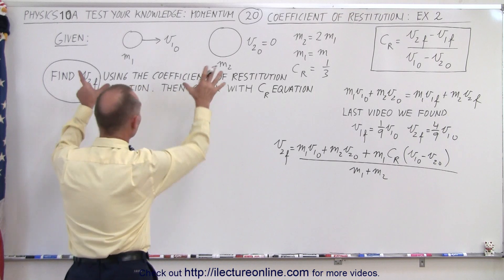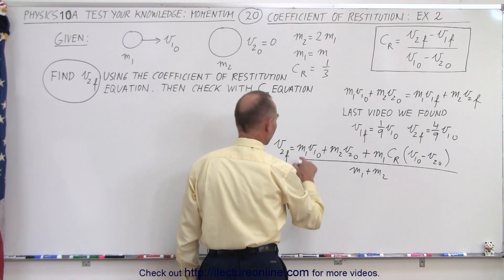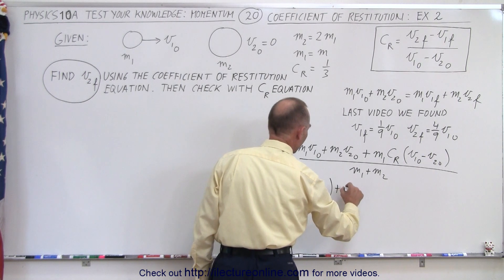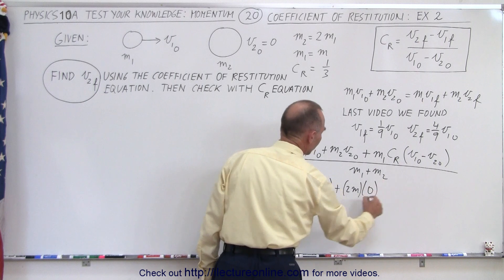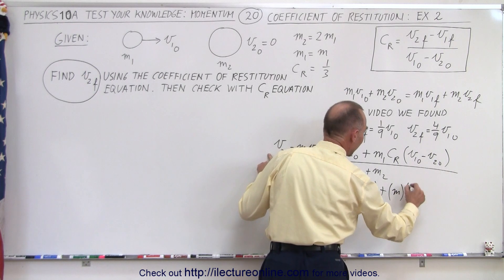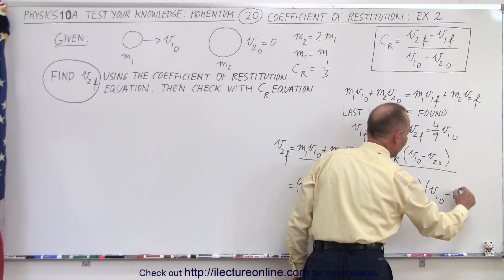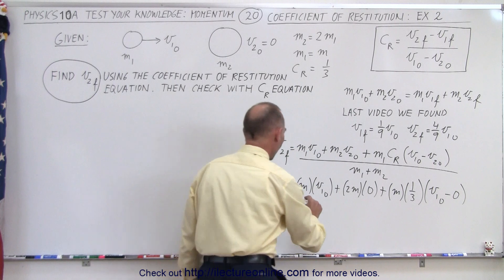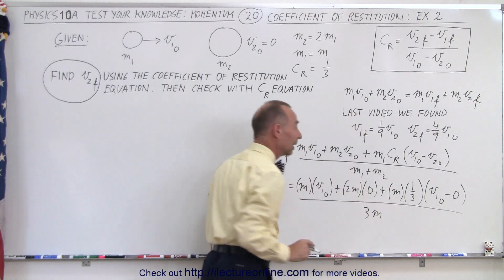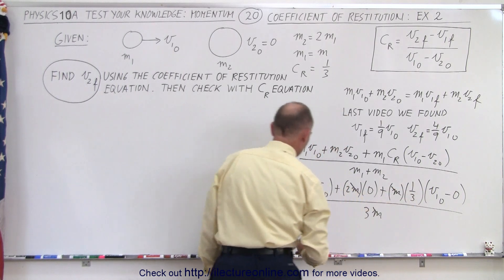Let's now plug what's given into that equation to see if we end up with the same value for v2 final. This is equal to m1, which is m, times v1 initial, plus m2, which is 2m, times its initial velocity of 0, plus m1, which is m, times the coefficient of restitution one-third, times v1 initial minus 0, all divided by m plus 2m, which is 3m.